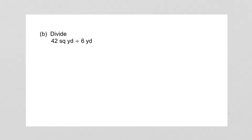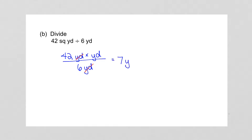Part B: divide 42 square yards by 6 yards. Square yards means yards times yards. Dividing by 6 yards cancels one of the yards, so 42 divided by 6 is 7, and we're left with yards — the answer is 7 yards.